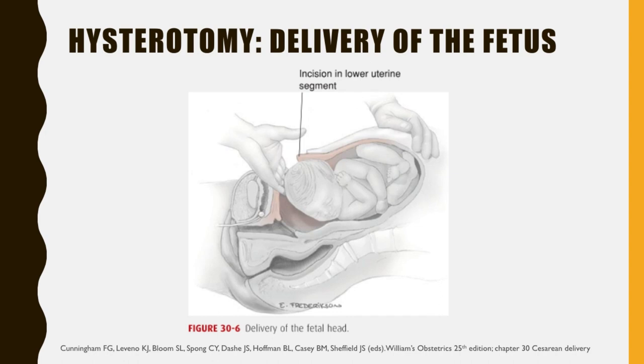As an alternative, a pull method is used in which the fetal legs are grasped and delivered through the hysterotomy opening, and the fetus is then delivered by traction as one would complete a breech extraction. Support for this latter approach comes only from small randomized trials and case series. A low vertical hysterotomy incision may also be selected for more room. If a low transverse incision has already been made, it can be extended to a J, U, or T incision.